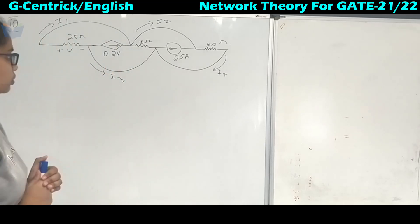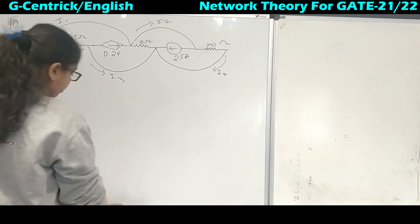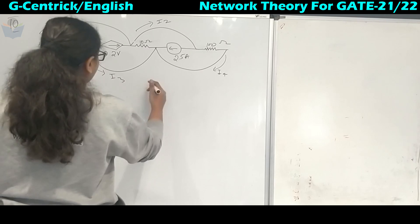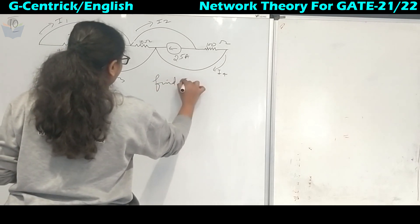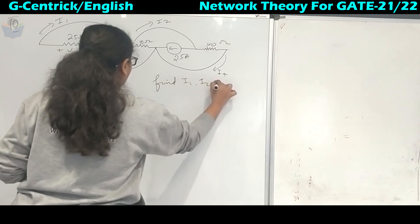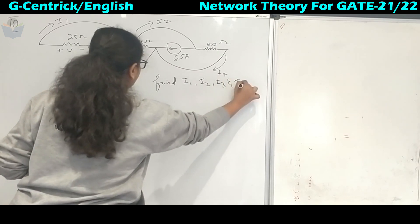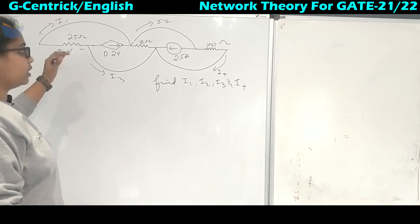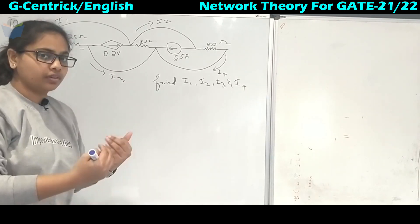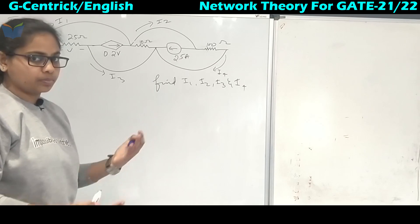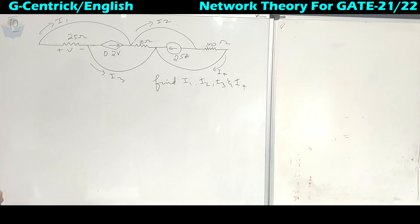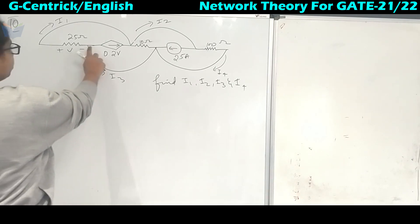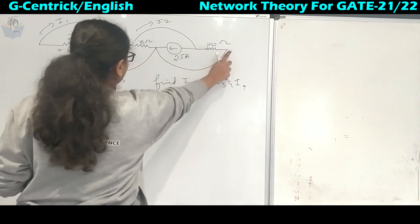Coming to the 10th question: we have to find I1, I2, I3, and I4. The network is in a zigzag pattern. Whenever a zigzag pattern is given, we will redraw it into a normal simple circuit. To do that, we first identify the nodes — we have nodes 1, 2, 3, 4, and 5.